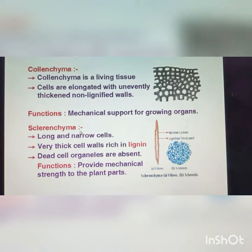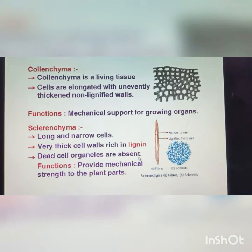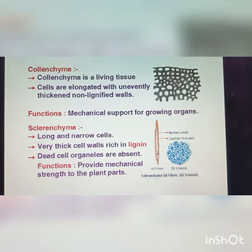Next is sclerenchyma. Sclerenchyma has long and narrow cells with very thick cell walls. Rich in lignin. The cell organs are absent — these are dead cells. Sclerenchyma provides mechanical strength to the plant parts.